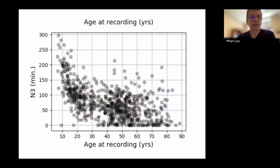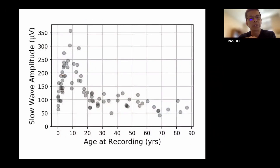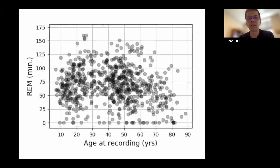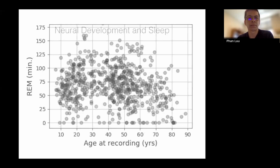Beyond N3 sleep duration, if you also look at slow wave amplitude — the slow waves that characterize N3 or deep sleep — the amplitude increases from postnatal life and then starts decreasing, mirroring the duration of N3 sleep as a function of age. But if you look at time spent in REM sleep, you don't see this same pattern — REM does not show a clear increase or decrease with age.